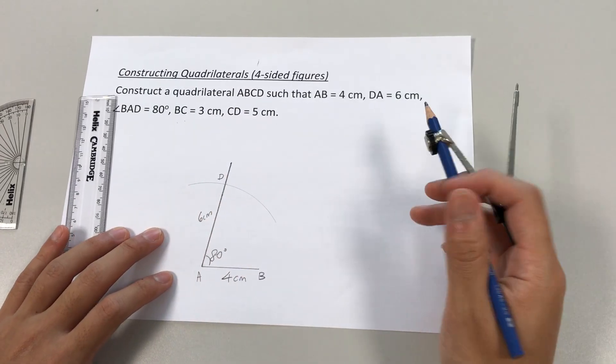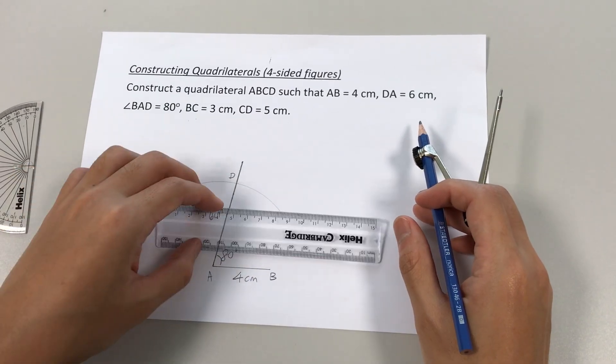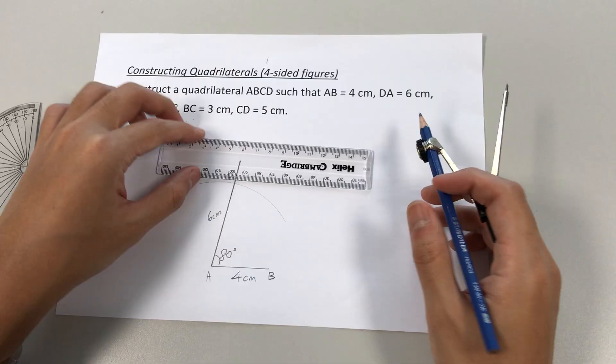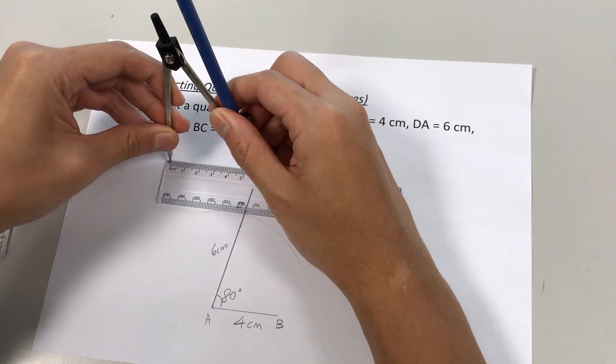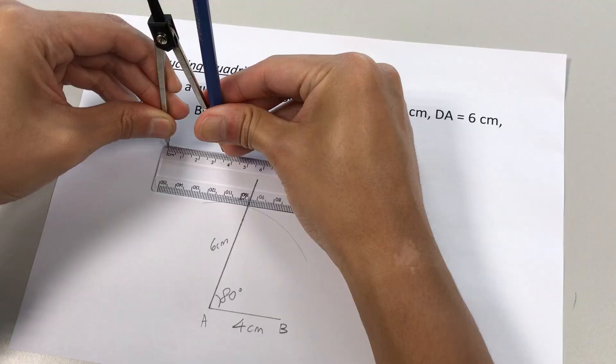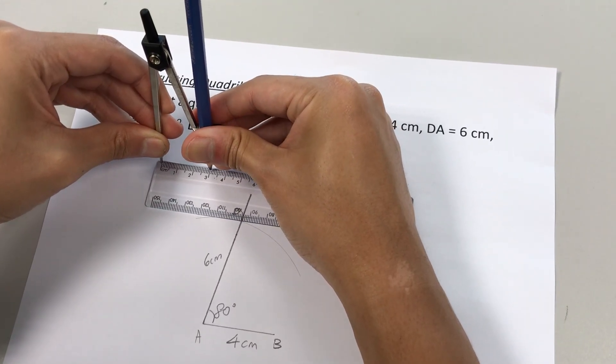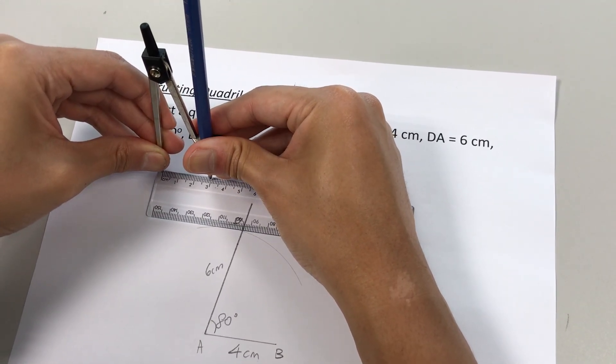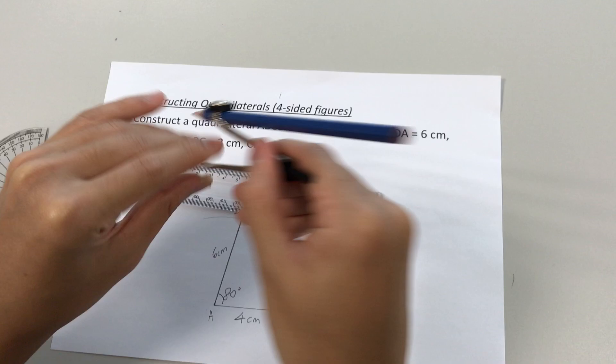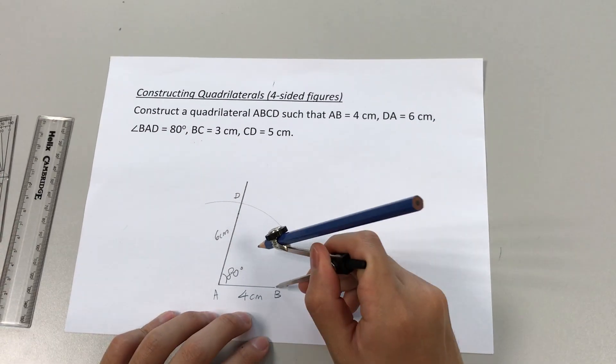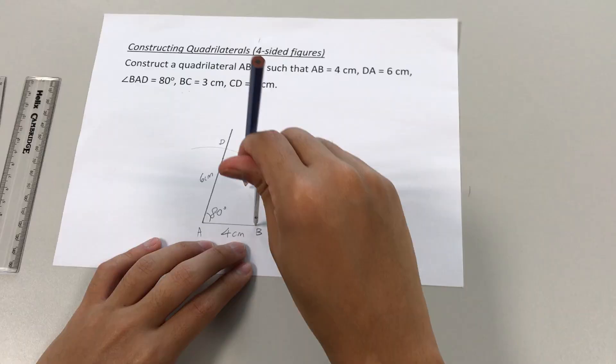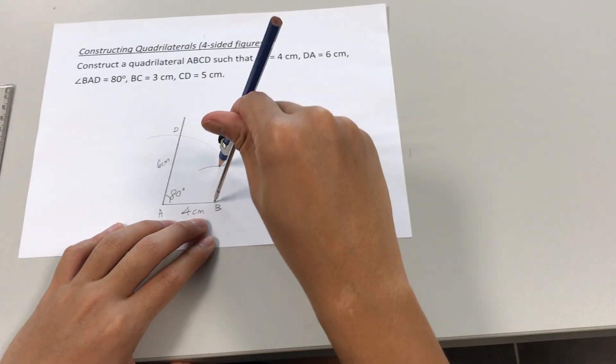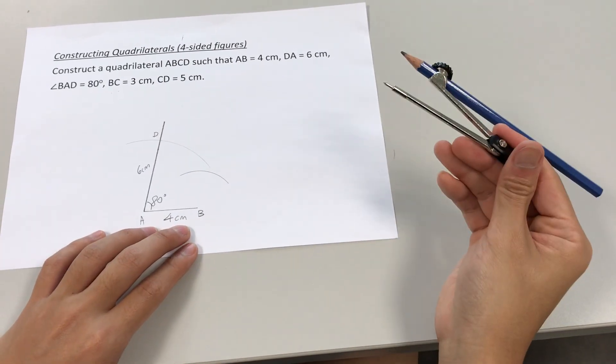BC, three centimeters. Take our ruler. Mark out three centimeters with your compass. Okay, three centimeters. Remove it. Place the needle at B. Now, draw a light line. As such.